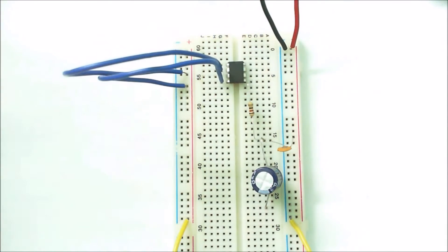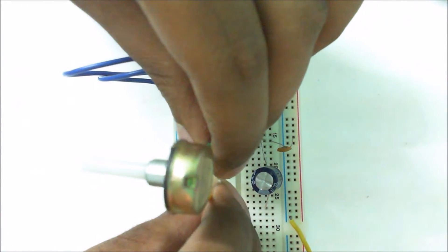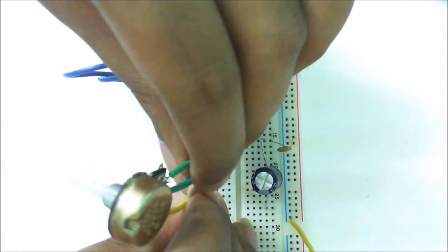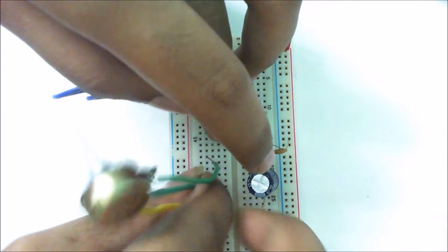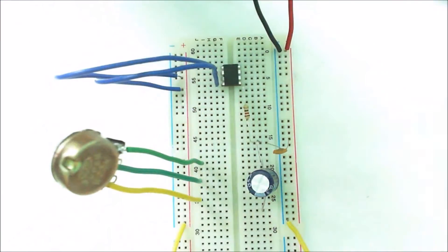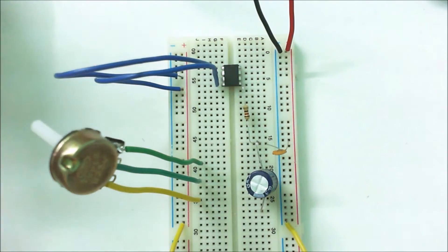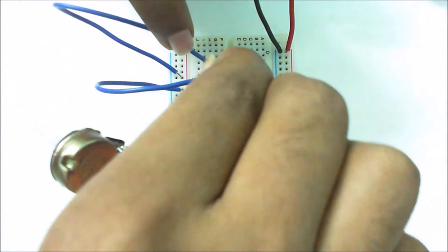Now place the potentiometer on the breadboard. Connect the middle pin of the potentiometer to pin 3 of LM386.